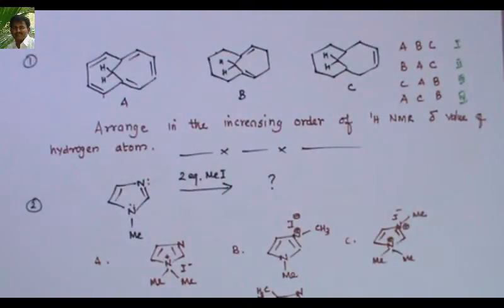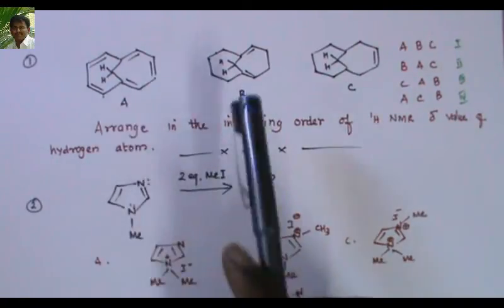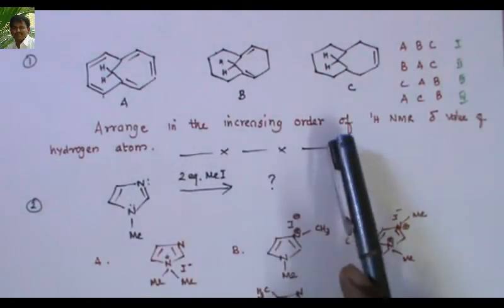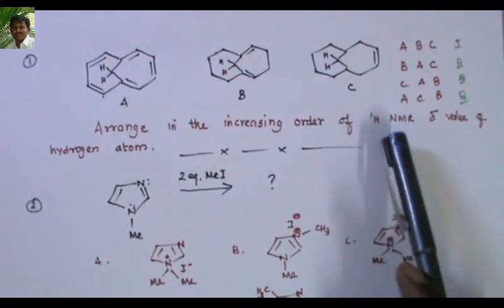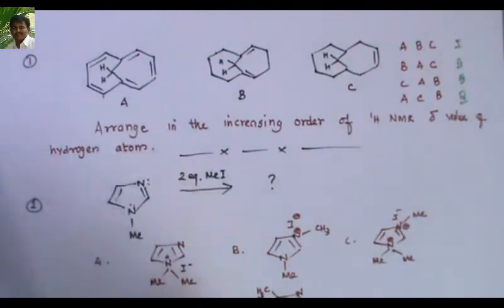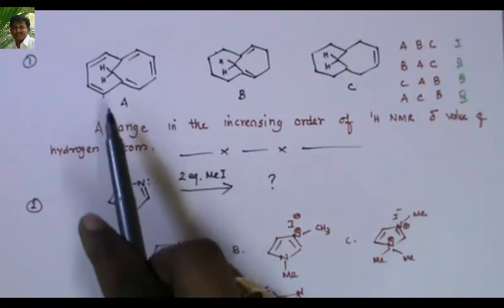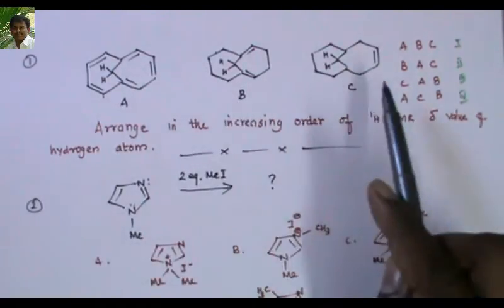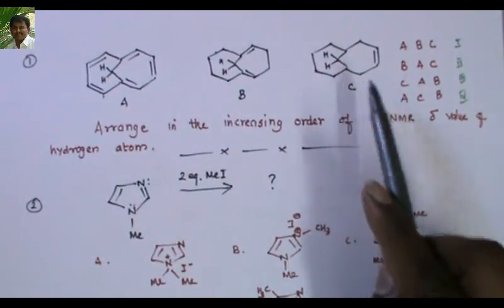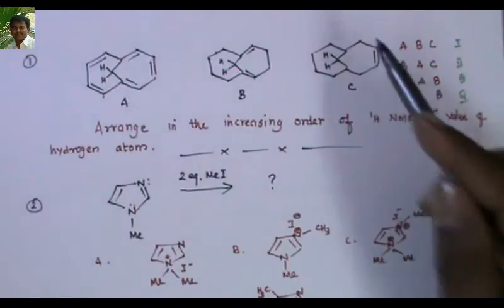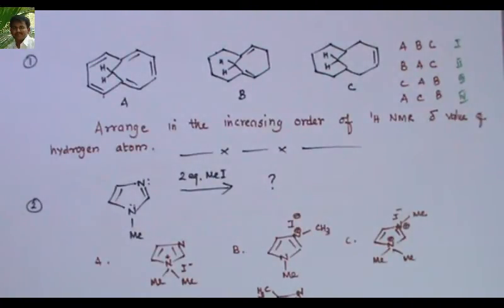Here I have some interesting problems. First one: arrange the above compounds in the increasing order of the proton NMR delta value of the hydrogen atom mentioned. Three compounds are given — this one is aromatic, this is an allylic proton, and this one is aliphatic with no double bond. Arrange them in the increasing order of the proton NMR delta value.